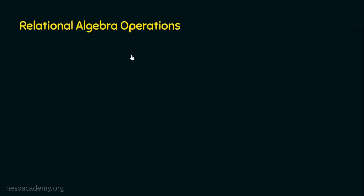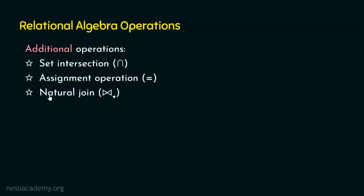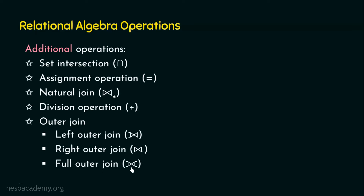Coming to the additional operations, we have various additional operations in relational algebra. They are: Set Intersection, Assignment, and Inner Join — where we are going to focus on Natural Join, Equi Join, and Theta Join, with more emphasis on Natural Join. The next additional operation is Division. And the last additional operation we are going to focus on is Outer Join, where we will see three forms: Left Outer Join, Right Outer Join, and Full Outer Join. We have seen the various fundamental and additional operations, and in coming lectures we will cover all of them one by one with examples.